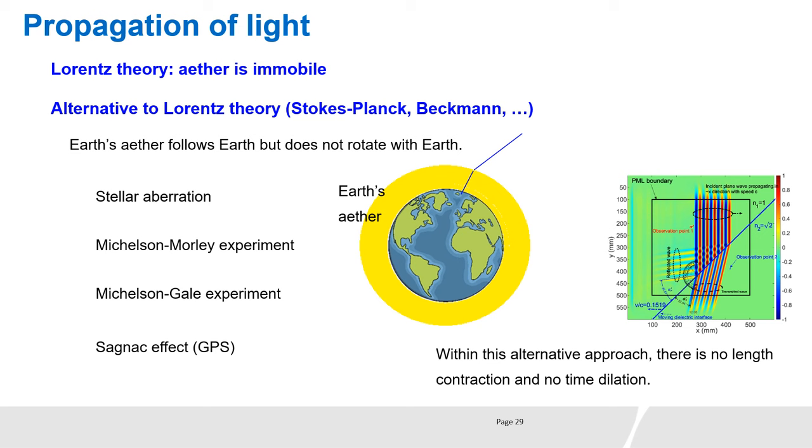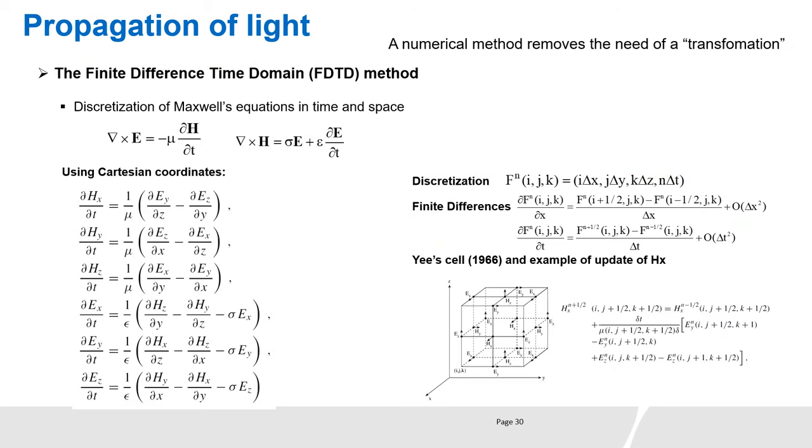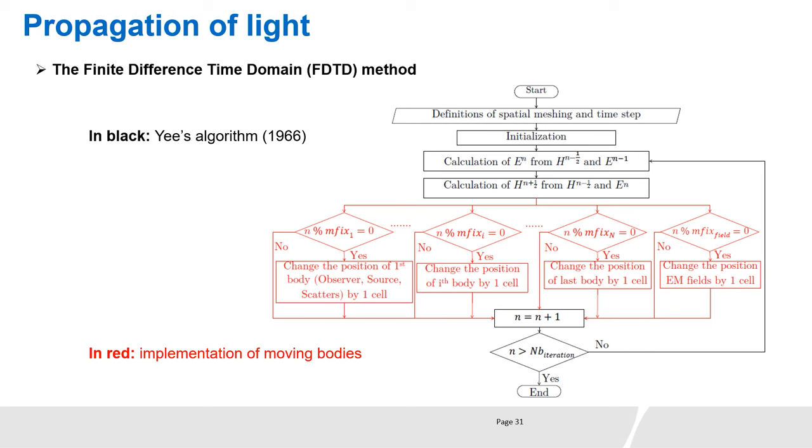Instead of transforming Maxwell's equations, space and time, one can resolve Maxwell's equations numerically and implement numerically the movements of objects. The finite difference time domain method, FDTD, is a well-known numerical approach based on the discretization of Maxwell's equations in space and time. Using the FDTD approach, multiple bodies, such as sources, observers, and scattering objects, can move with different uniform speeds or with non-uniform movements. On the other hand, the Lorentz transformation is limited to one uniform speed for only one observer.